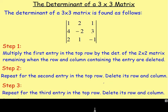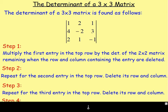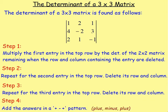Step 3: repeat that for the third entry in the top row, which is 1. Delete that row and column, and you're left with that 2x2 matrix. Work out its determinant and multiply by 1. Step 4: add the answers in a plus, minus, plus pattern.